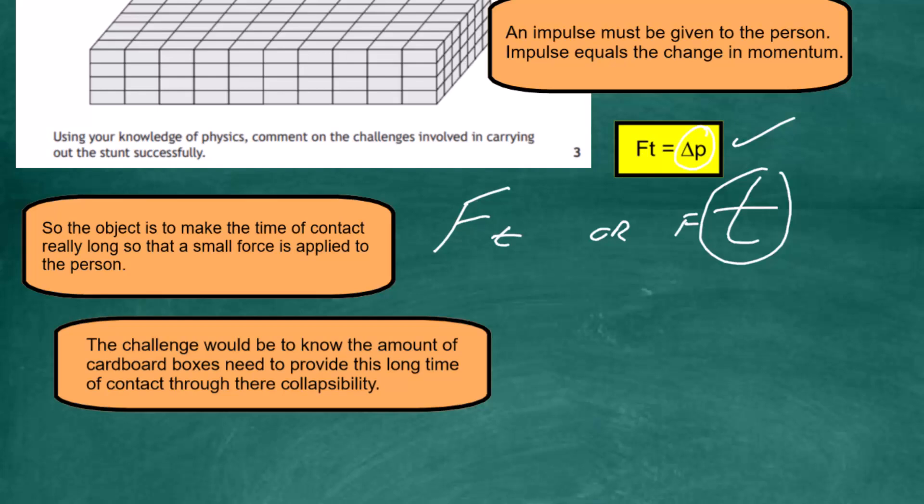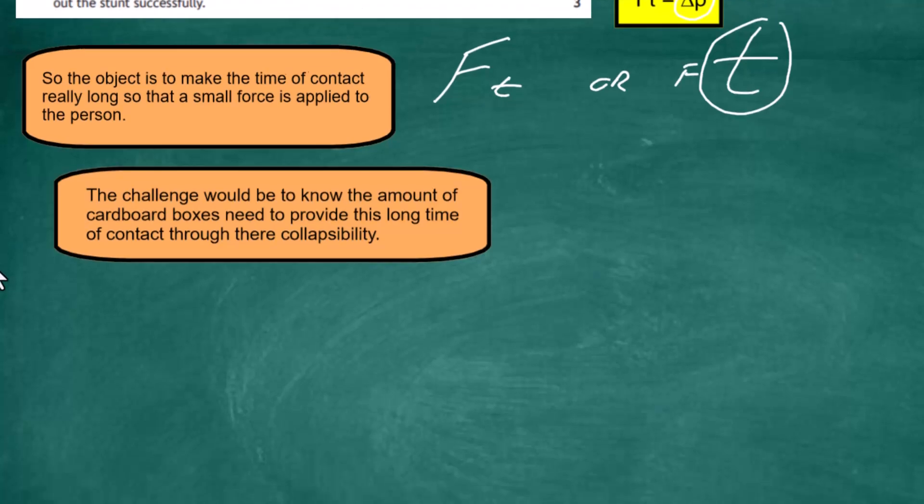We can bring in that statement. We can say the challenge would be to know the amount of cardboard boxes needed to provide this long time of contact through their collapsibility. Will three layers do the job? Will four layers do the job? Will five layers do the job? We're looking for the longest time of contact possible because if we get that, we have the product—the F here—as small as possible. So that's the sort of argument you can take to get your final answer there.